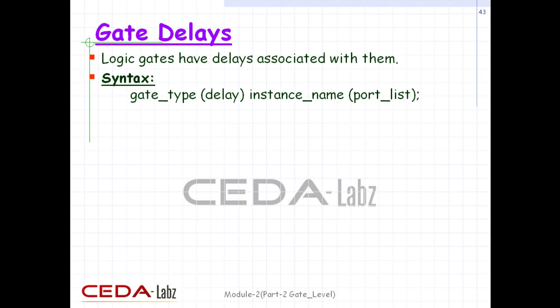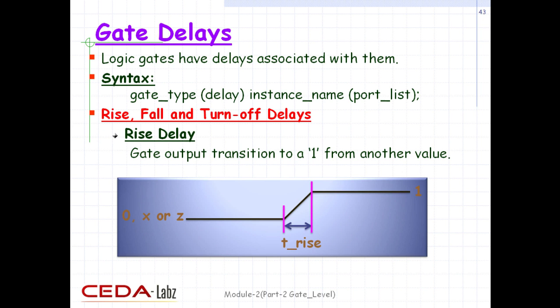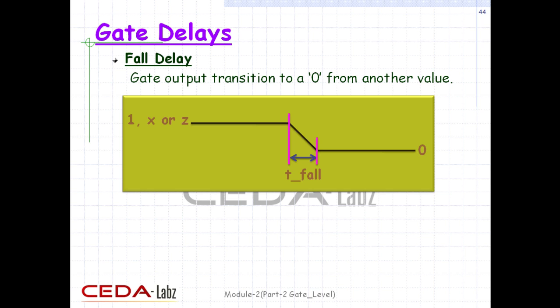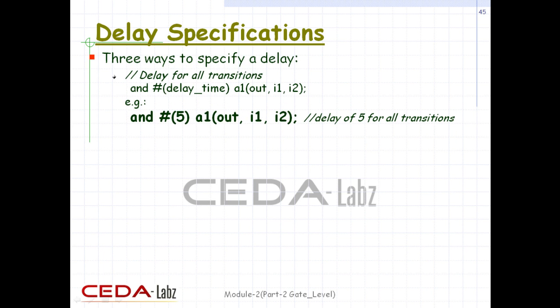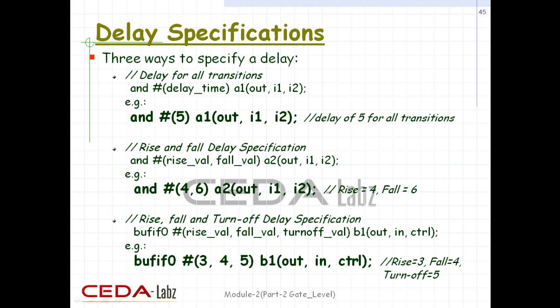A gate delay can be comprised of up to three values: rise, fall, and turnoff delays. The rise delay is associated with a gate output transition to 1 from another value. The fall delay is associated with a transition to 0. The turnoff delay is associated with a transition to high impedance Z. If the value changes to X, the minimum of the three delays is considered. If only one delay is specified, it is used for all transitions. If two delays are specified, they refer to rise and fall; the turnoff delay is the minimum of the two. If all three are specified, they refer to rise, fall, and turnoff. If no delay is specified, the default is zero.